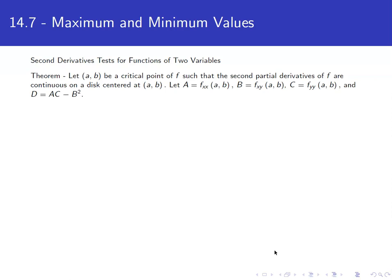To determine whether a critical point gives a maximum, minimum, or saddle point, we use the second derivatives test for functions of two variables. Suppose we have a critical point and the second partials are continuous on a disk centered at that point. We define: A = f_xx(a, b), B = f_xy(a, b), C = f_yy(a, b), and D = AC - B².